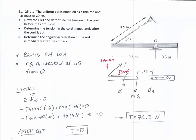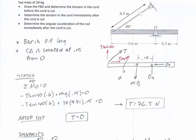The next problem uses sum of moments about O equals IO·alpha. When the string is broken, the object begins to rotate and we look for the initial angular acceleration. Before that, in the static case, we find the tension before the string is cut. The free body diagram needs reactions OX and OY, the MG, and the center of gravity located 0.15 from the pivot. Tension has sine and cosine components. Setting sum of moments about O equal to zero gives tension equal to 76.3.